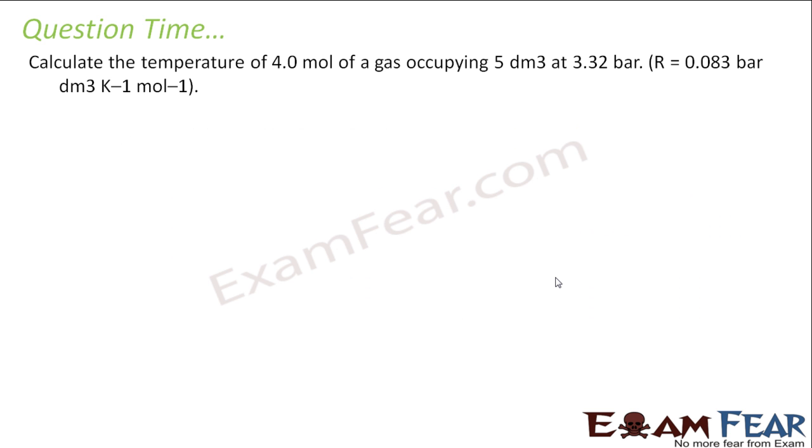We define the temperature of 4 mole of gas occupying 5 dm cube at 3.32 bar pressure where the R value is given. So we can directly use the formula PV is equal to nRT. I have to find the temperature.